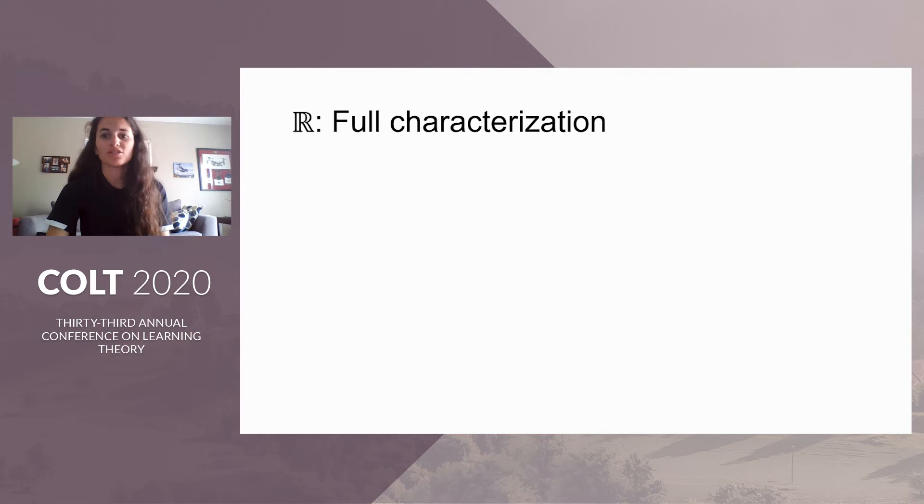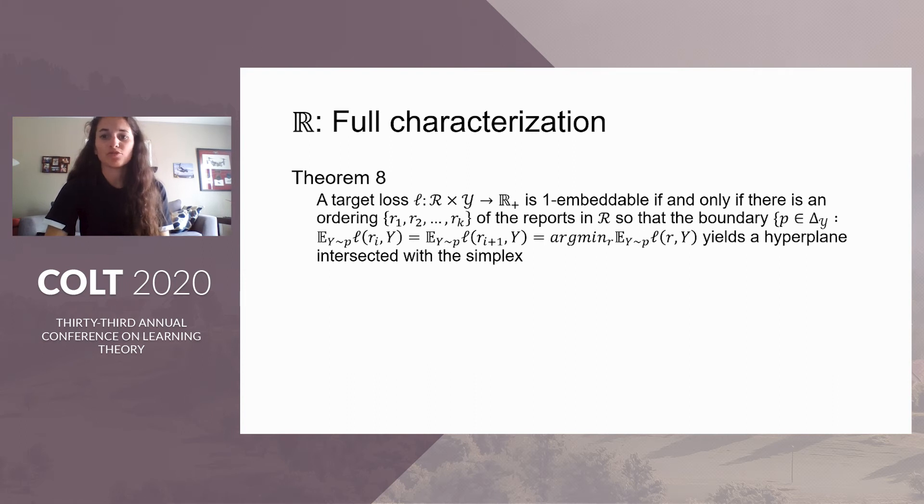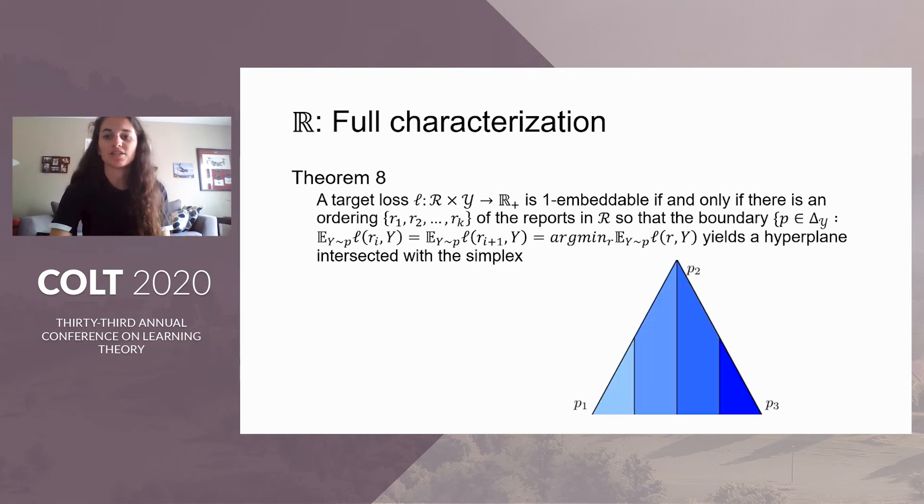First, we learn that a discrete loss is one embeddable if there's an ordering of the reports, such that the set of distributions where consecutive reports both minimize the expected loss forms a hyperplane when intersected with the simplex. For intuition, suppose that each color on this three-outcome simplex corresponds to a report, and the region of the simplex in that color is the set of distributions where the report minimizes the expected discrete loss. The black lines in between two colors is the boundary that we're interested in. Since each of these is a line in the two-dimensional reals, and thus a hyperplane intersected with the simplex, this loss is one embeddable. Moreover, this proof is constructive, and for the construction, we refer you to theorem 11 of the paper.